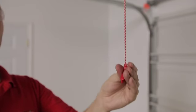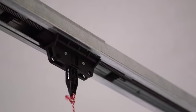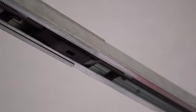Using the Emergency Release Cord, disengage the shuttle from the carriage and move the shuttle towards the door.